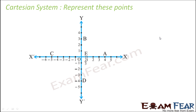Let's take some more examples. For point A, as per our Cartesian system we write x-coordinate comma y-coordinate. The x-coordinate is the distance along the x-axis — that is the only line parallel to x-axis touching this point. The distance from the y-axis is 4.